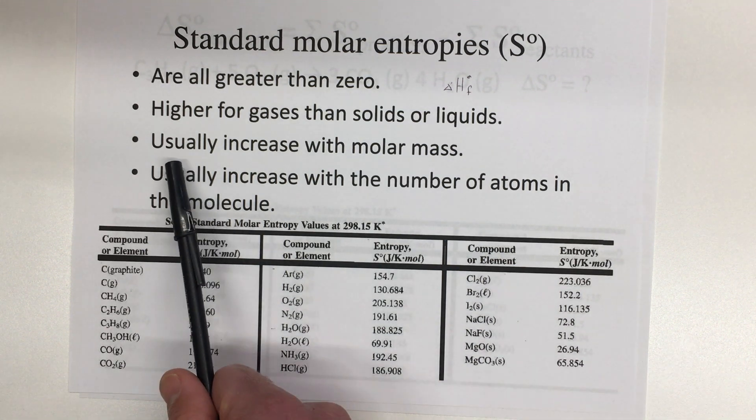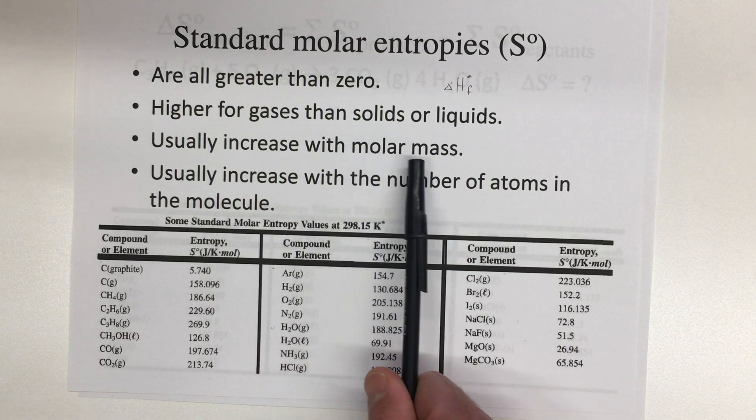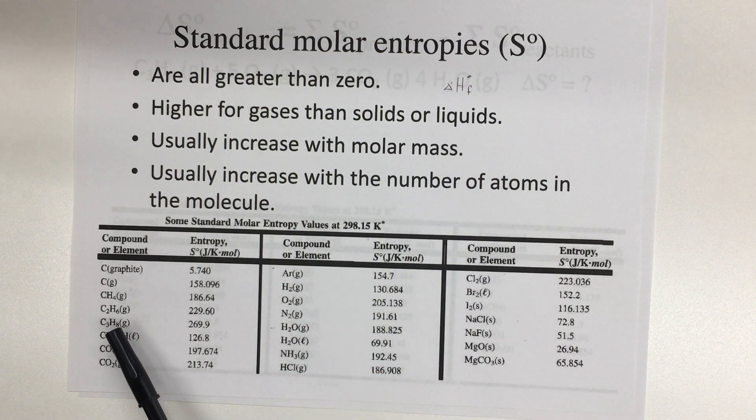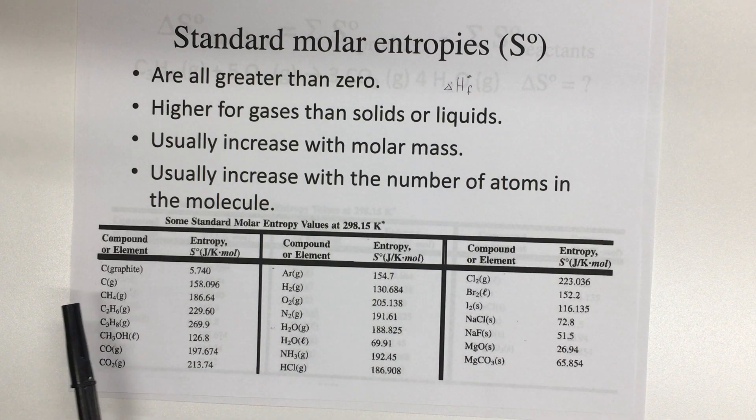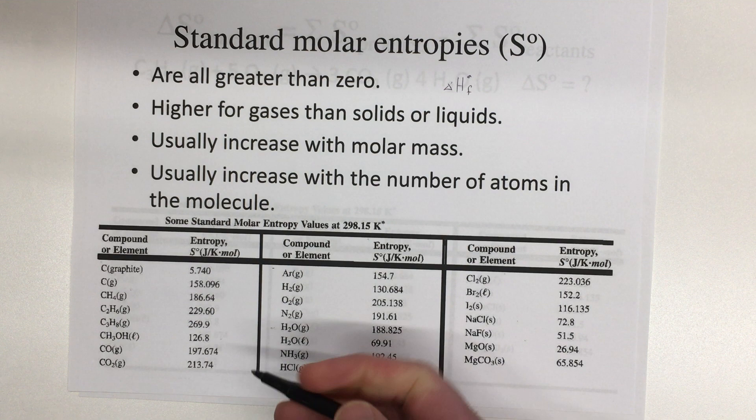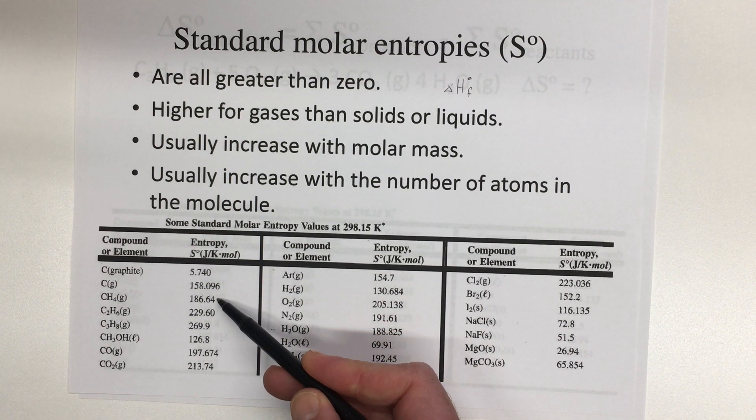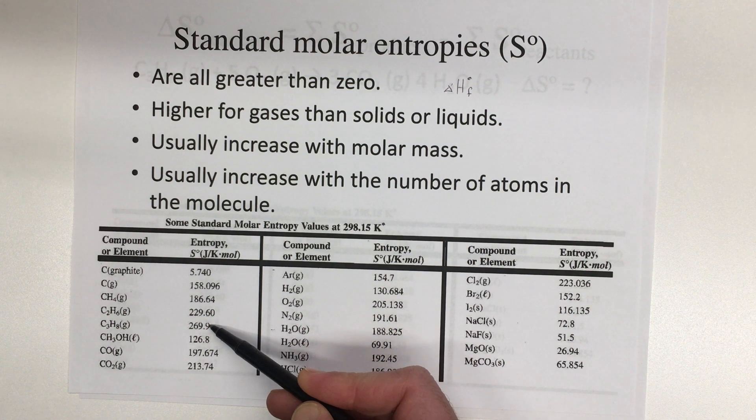Other things we might notice is that entropy is usually higher for compounds that have a higher molar mass. So if we compare a couple of these hydrocarbons over here, like CH4 and then moving up to C2H6 and C3H8, that's an increase in molar mass. You've got more carbons and more hydrogens, and you'll see that we have an increase in the disorder, increase in the entropy.